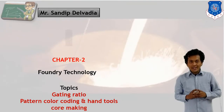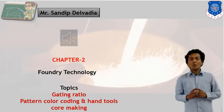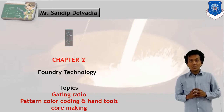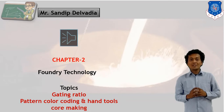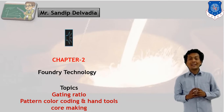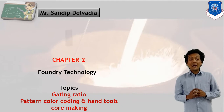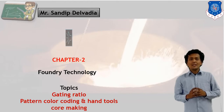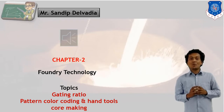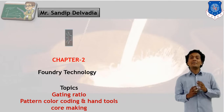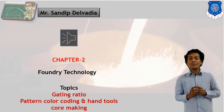Hello students, in Manufacturing Technology we have been going through Foundry Technology. Our purpose is to execute the casting process. We have discussed various types of patterns. In today's session, we are going to discuss some secondary topics like Gating Ratio, Pattern Color, and different hand tools used in the casting process and core making process. We have discussed primary topics like different types of patterns, various casting processes, Gating System and different steps in the Gating System and design of Gating System.